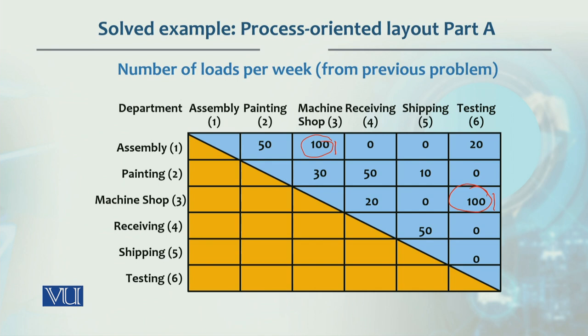Next, assembly and painting have 50 movements, so this is the next highest. Between painting and receiving, and receiving and shipping, this is priority 2. If we have two priorities to meet, the remaining departments need less attention, although we also have priority 3 which is 30 movements and priority 4 which is 20 movements.